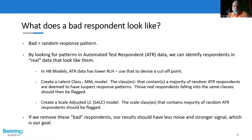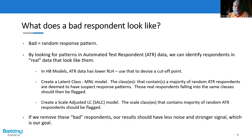Another method involves creating latent class models, mixing the robotic and human respondents, then running latent class multinomial logit with many classes. If a class contains a majority of random respondents, they throw out all respondents in that class. Finally, they look at a scale-adjusted latent class model — a way of running latent class analysis to constrain one class to have zero scale, implying random choosing. Those are the three methods they evaluated.